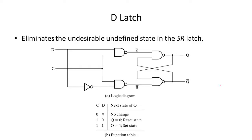As we discussed in our previous sessions, SR latches have an undefined state for a specific input — normally 1-1 for set and reset. This problem can be solved by using a D latch. The D latch eliminates the undesirable undefined state in the SR latch, and the solution is pretty simple: it just adds a NOT gate and attaches the R input with the S input.